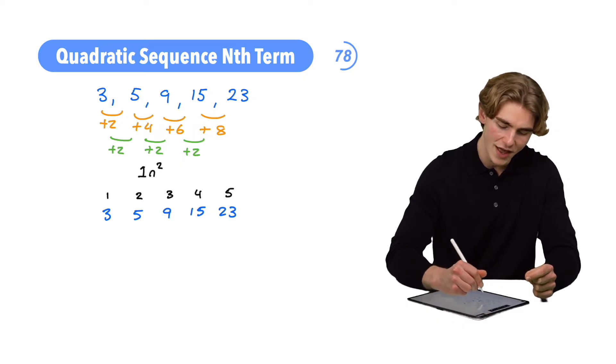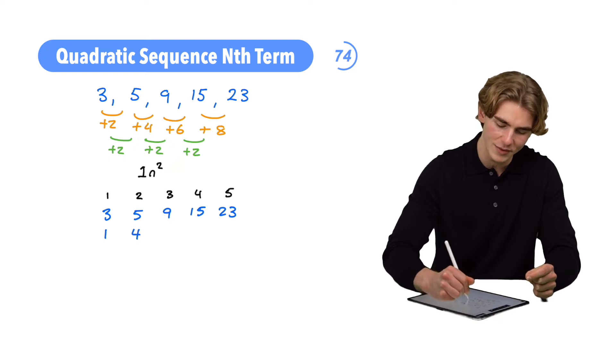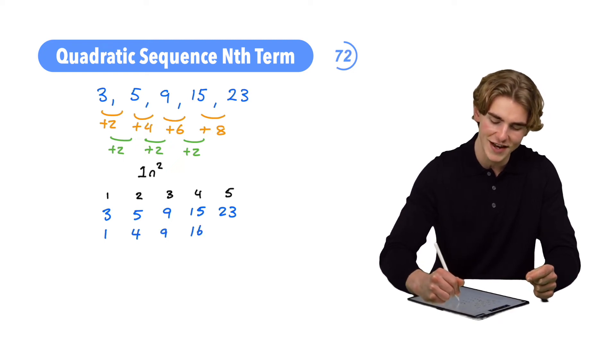1 times by each of our term numbers. For our first term, that's going to be 1. For our second term, it's going to be 4. For our third term, it's going to be 9. For our fourth term, it's going to be 16. And for our fifth term, it's going to be 25.